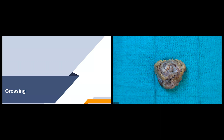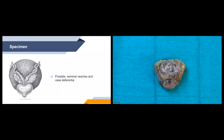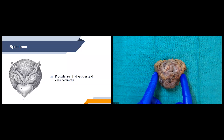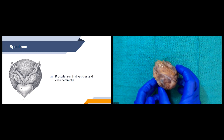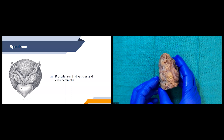For our grossing steps: first, we make sure patient identifiers are correct, check the clinical history — for this specimen it's out for prostate cancer — then go through the specimen, ink code, main findings, and section code. With the radical prostatectomy specimen we take measurements from base to apex, medial to lateral, and anterior to posterior. We also take measurements of both seminal vesicles as well as the vasa deferentia.